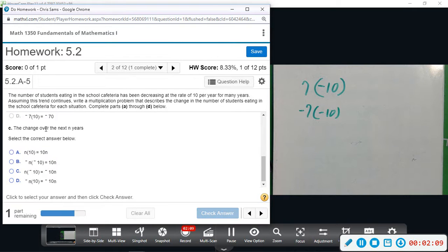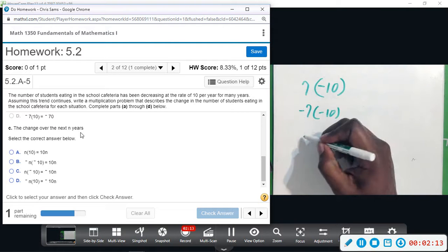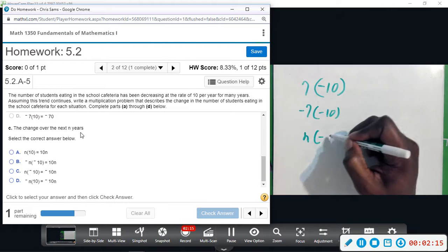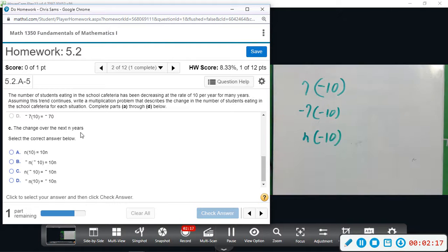See the change over the next N years. So we would just do N times negative ten for any number of years, N being any number of years. And C models that situation.